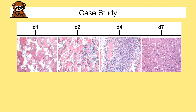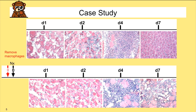By day seven you see almost completely regenerated muscle — not fully differentiated fibers, but large myotubes indicating near-complete regeneration. In the condition where monocytes are removed — essentially removing the ability to have macrophages in the muscle — the muscles look similar at day four, but by day seven you do not see regeneration.